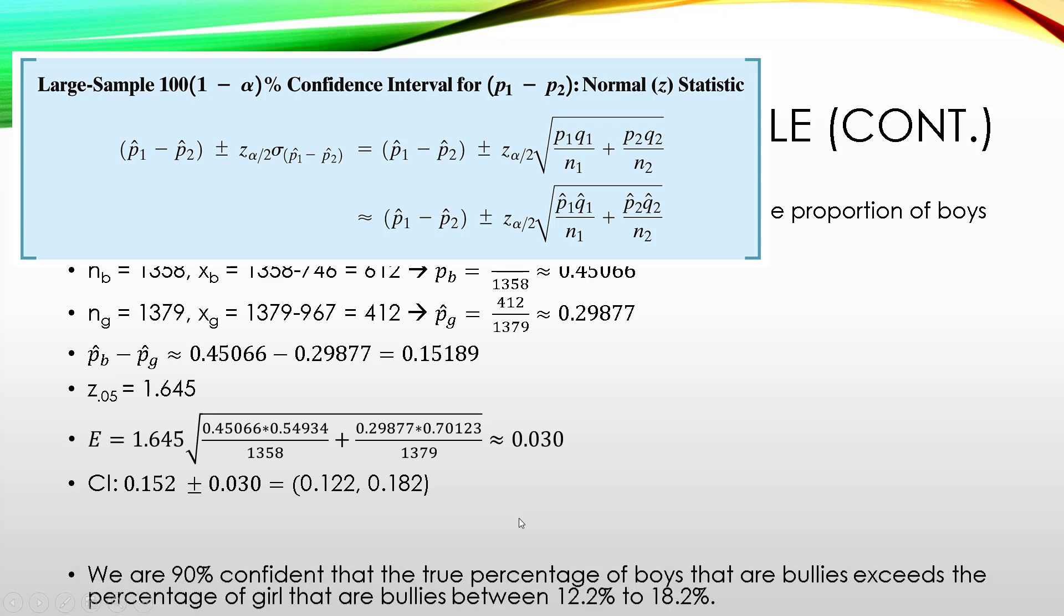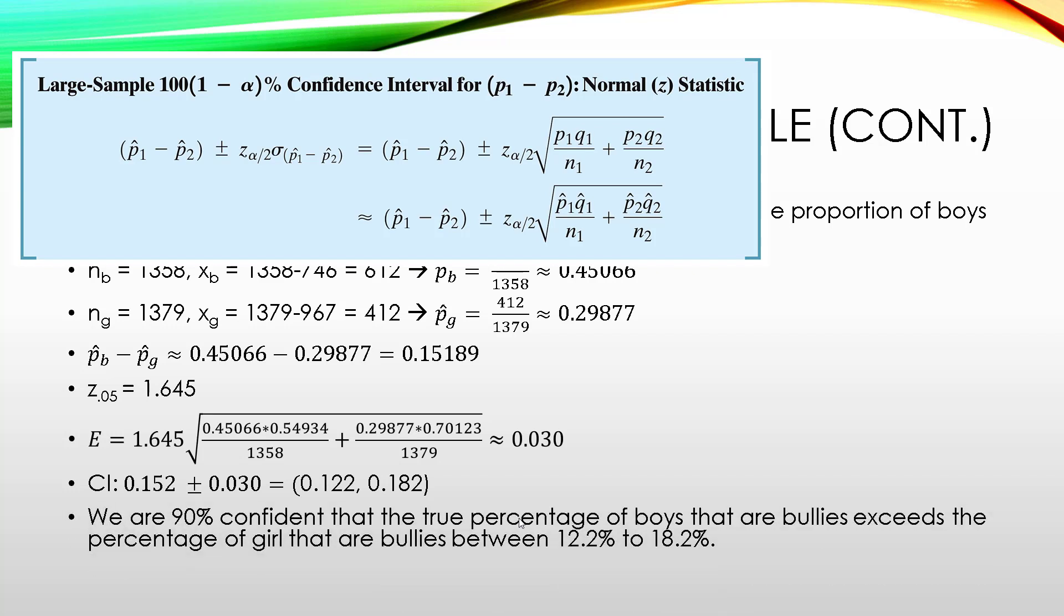Interpreting this, we are 90% confident that the true percentage of boys that are bullies exceeds the percentage of girls that are bullies between 12.2% to 18.2%.